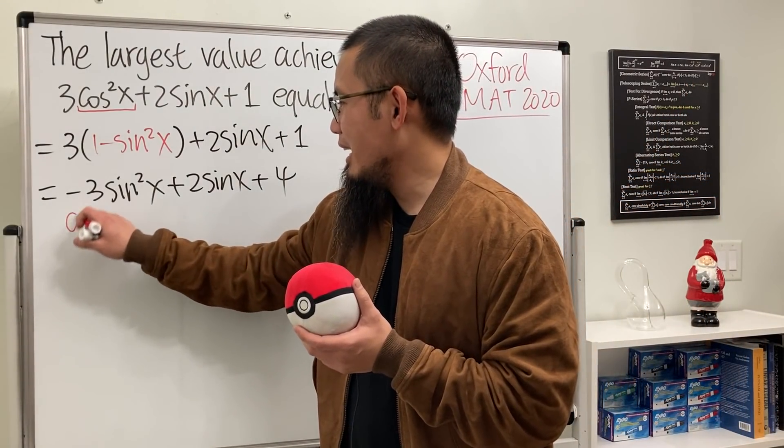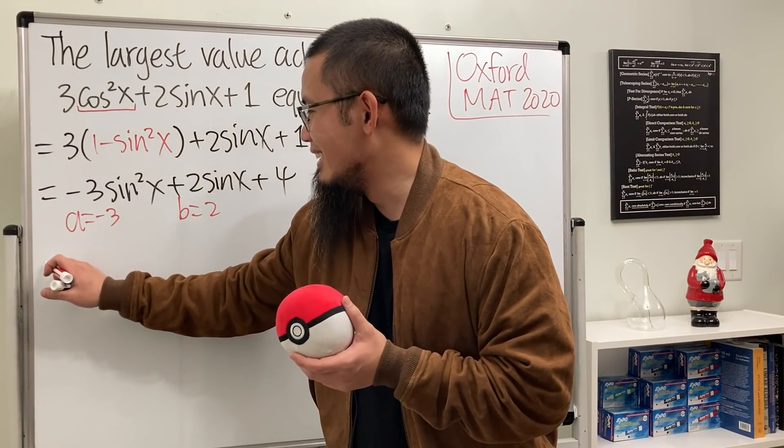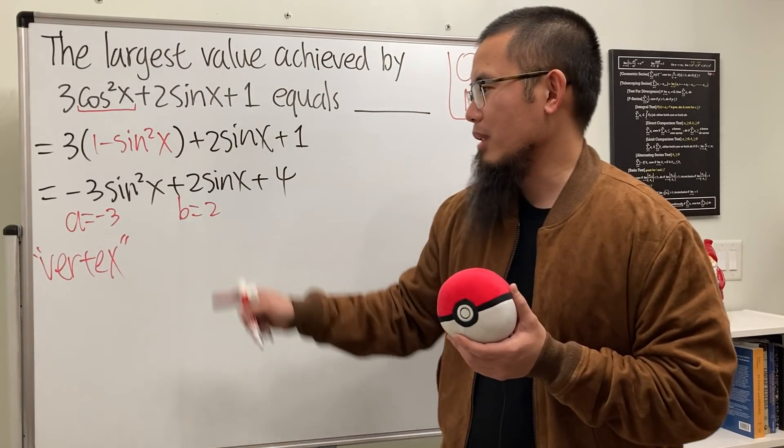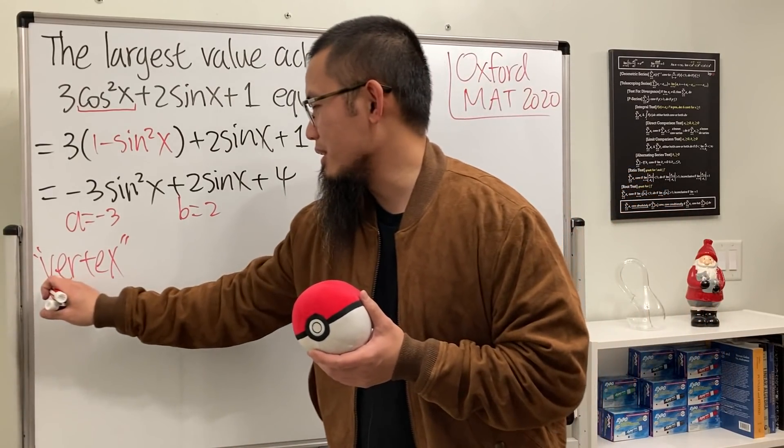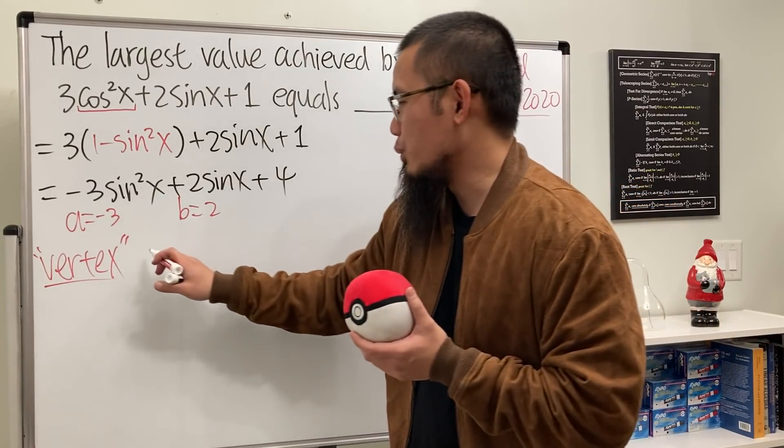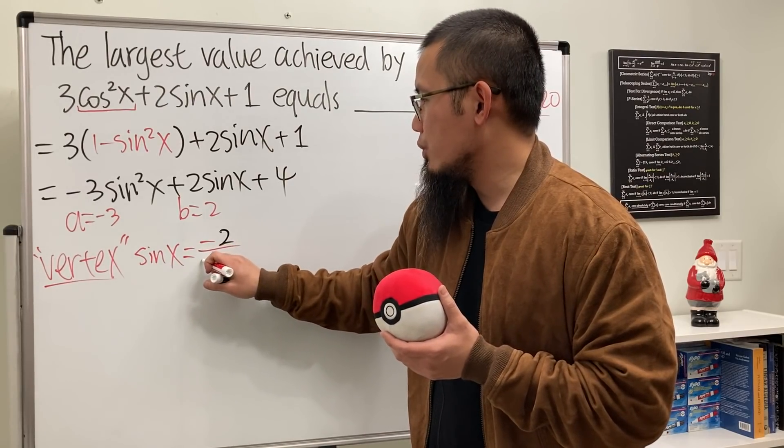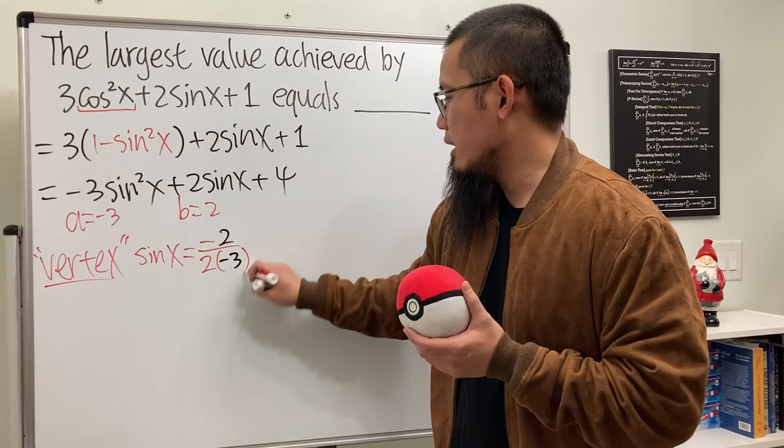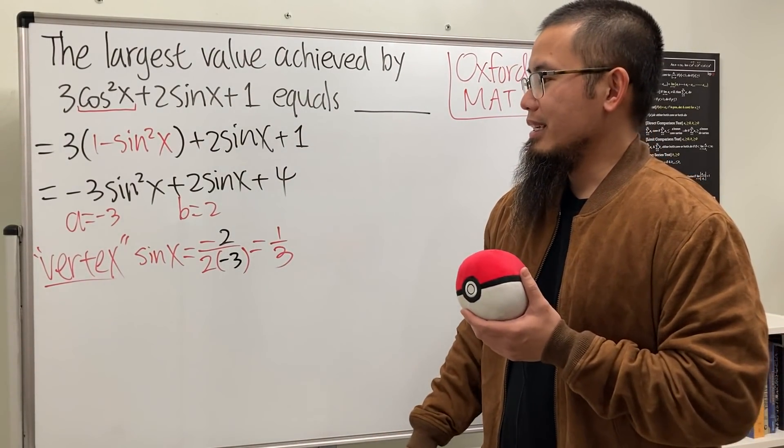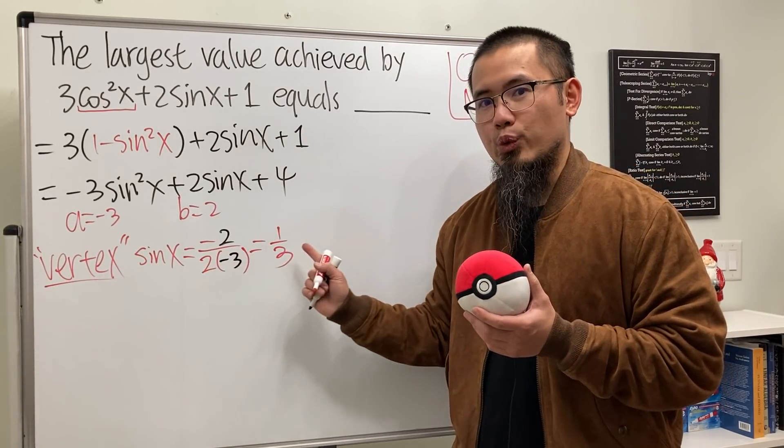The vertex formula. Anyway, a is negative 3, b is 2, and c doesn't really matter. The vertex of this, not really like a vertex because that's the vertex for parabola and here you have infinitely many of them, so let's just put down like a quotation mark. It's at, well this is a quadratic in terms of sine, so we'll have to say sine x equals negative b which is negative 2 over 2 times a which is negative 3.